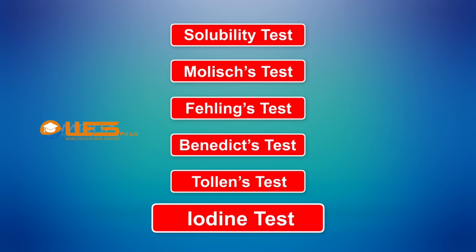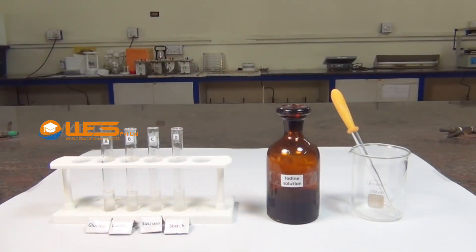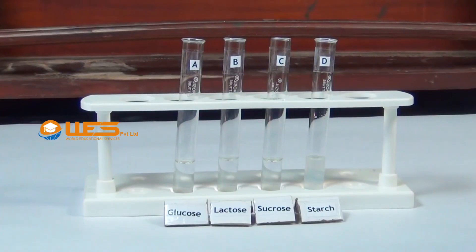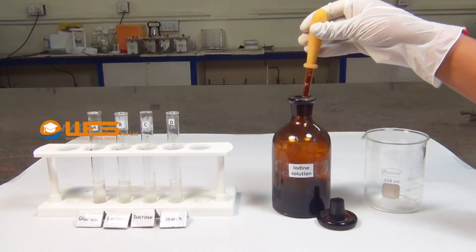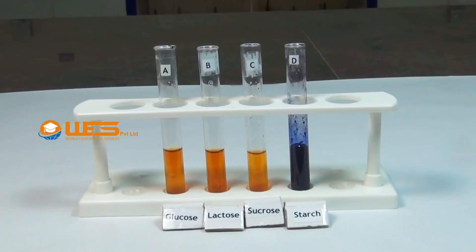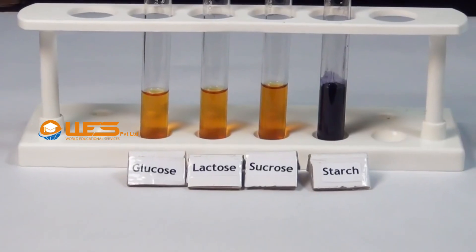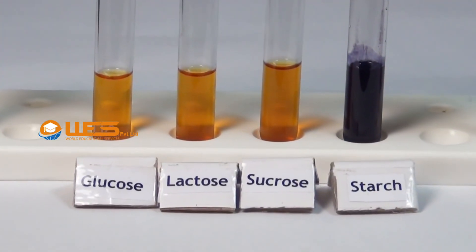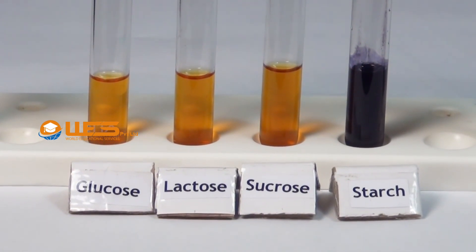Iodine Test. Take a small quantity of aqueous solutions of glucose, lactose, sucrose and suspension of starch in four test tubes A, B, C and D respectively. Using a dropper, add a few drops of iodine solution into each test tube. Iodine reacts with starch to form a blue-coloured starch-iodine complex, whereas no such complex is formed by the other samples.